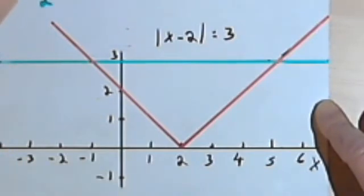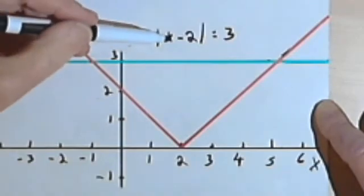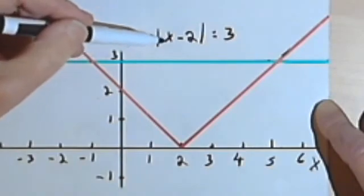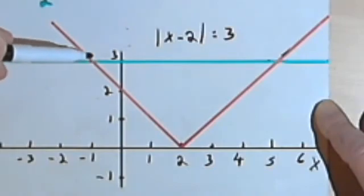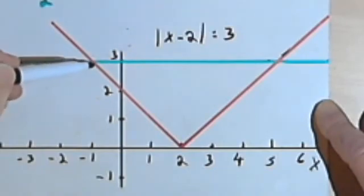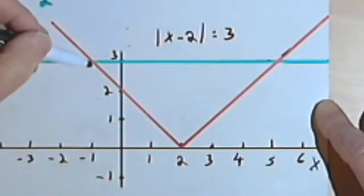Well, since absolute values can have positive and negative solutions, in other words, there's probably two answers to what x could be, there are probably going to be two answers for the absolute value of x minus 2 equals 3. So we're going to look at the two places where the graphs cross.